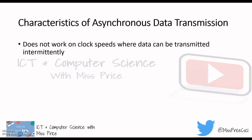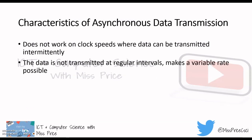Characteristics of asynchronous data transmission: it's quite simple — it doesn't need to work on clock speeds, so it doesn't have to match the speed of your internet or your processor. The data can be transmitted intermittently; it doesn't have to be transmitted at a continuous regular speed or regular interval. So it doesn't work on clock speeds at all, which is quite beneficial. The data is not transmitted at regular intervals, which makes a variable rate possible.